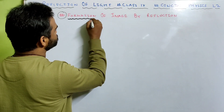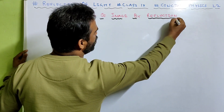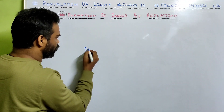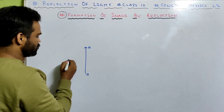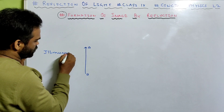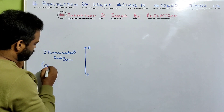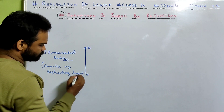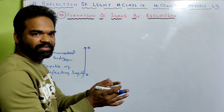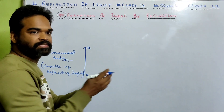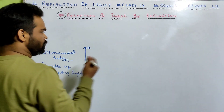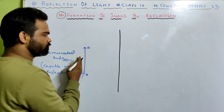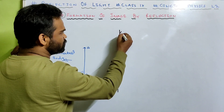This topic is very interesting: formation of image by reflection. How is image formed by reflection? Suppose I take an illuminated body AB. What is an illuminated body? It is a body capable of reflecting light. For example, the sun is a luminous body, while the moon is an illuminated body because it reflects light. Now, since we have done plane mirror, I'll take a plane mirror and see how the image of this illuminated object is formed by reflection.